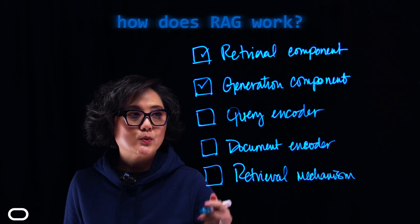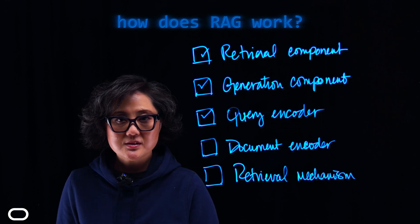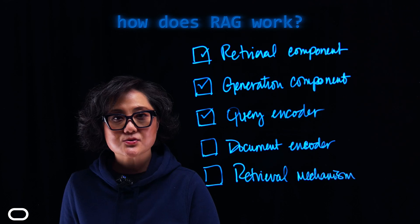Third, we have Query Encoder. This is a neural network, often a transformer, that encodes the input query into a dense vector representation. This vector is used to retrieve relevant documents from the index.